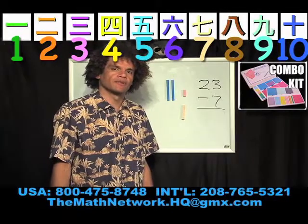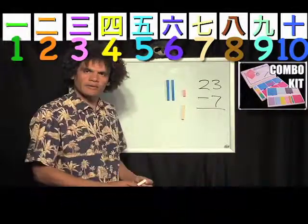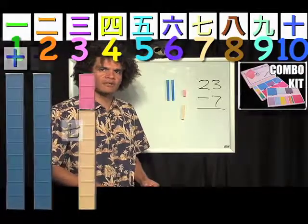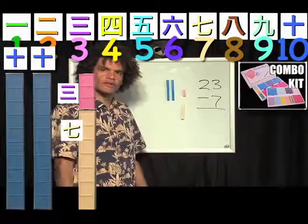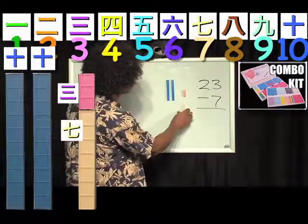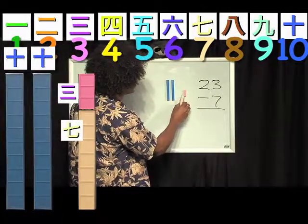Okay, a slightly more complex subtraction problem: 23 take away 7. Again, all I'm going to do is add, because you'd much rather add small numbers than subtract. So, do I have enough? The first question. Do I have enough? I don't have enough. I can't take this 7 out of that 3.